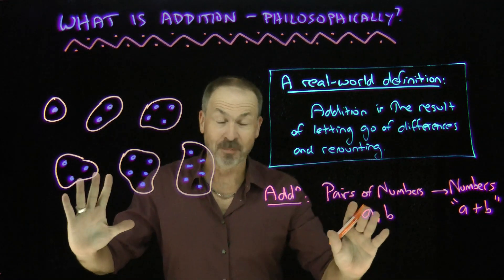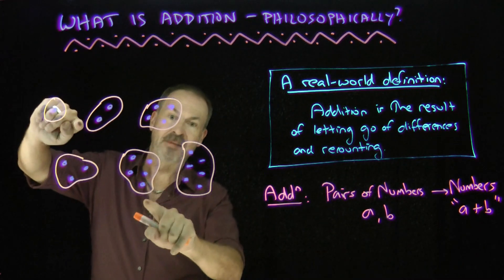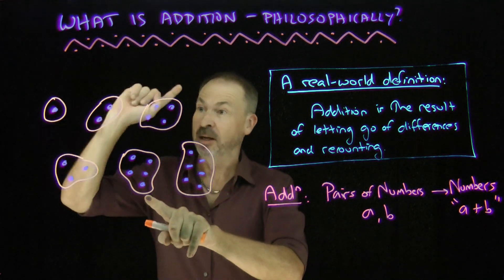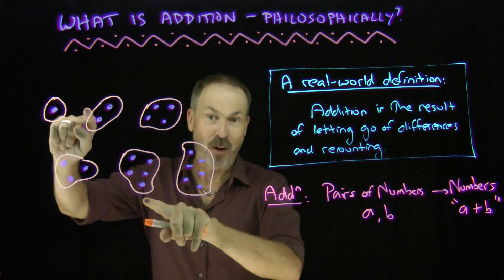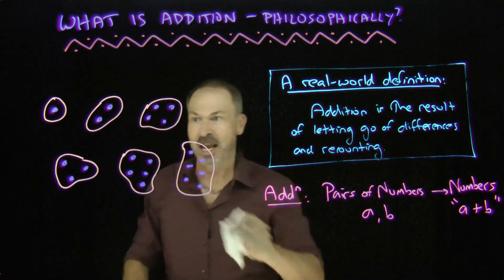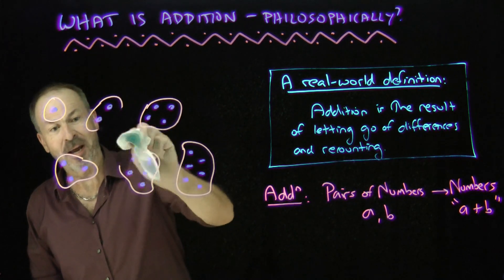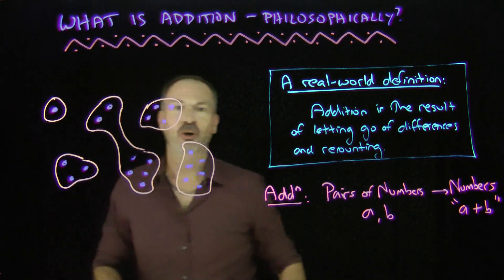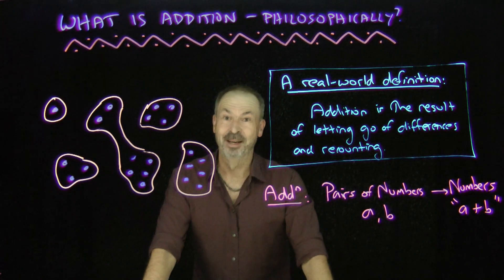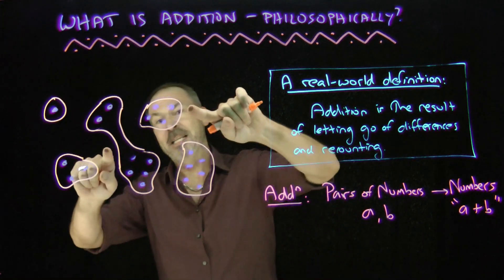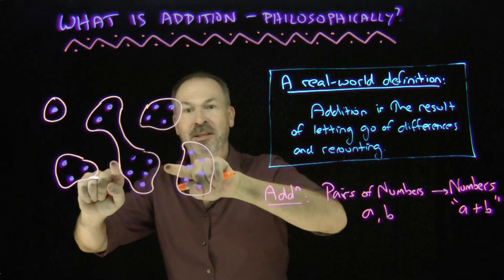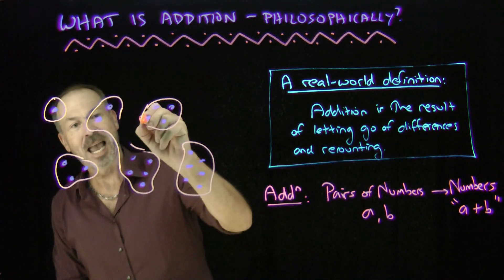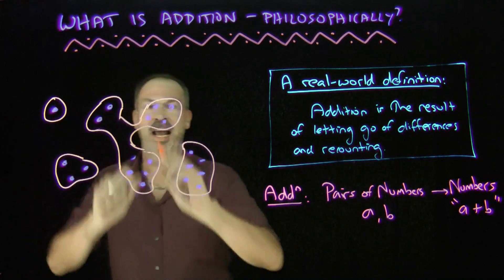Let's think about what addition really was. For example, if I chose this two and this five — addition is ignoring differences. Right now I've got some dots in one blob and some dots in a different blob. Let's ignore the fact that they're in different blobs. Addition is really saying: ignore all the differences and recount. There's two plus five — that's what addition is. And maybe I'll do addition here between these ones: dots in this blob, dots in this blob. Ignore differences, just regard them as always being in one blob — no difference between them. And bingo, I've just added the seven and the four.